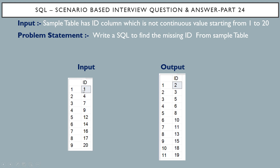If you see the input table, the missing IDs are 2, 3, 5, 6, 8, 10, and so on. We have to find all the missing IDs between 1 to 20 and represent them in the output table.